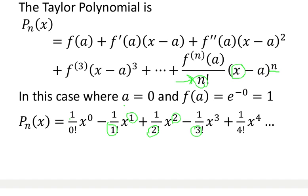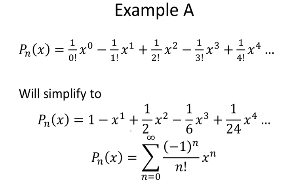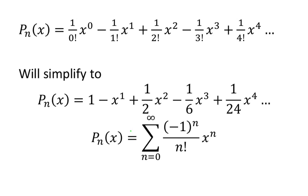You end up with this summed sequence of terms. When you simplify this, you get: 1 minus x plus (1/2)x² minus (1/6)x³ plus (1/24)x⁴ and so on. This is represented by the formula: negative 1 to the nth power divided by n factorial times x to the n. This summation, as you take it to an infinite number of terms, will approach the value of e to the negative x. So this is actually a way you can calculate e for a value.